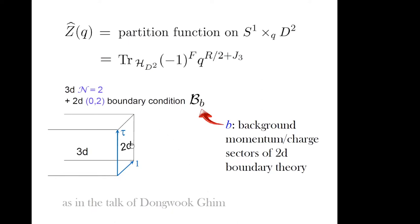This is a very funny partition function - a partition function of the 3D theory on a manifold with a two-dimensional boundary. The two-dimensional boundary has to preserve supersymmetry for this partition function to be well-defined. Since we start with 3D N=2 in the bulk, the half-BPS condition means that two-dimensional (0,2) supersymmetry should be preserved on the boundary. This is exactly the same context as in the first talk of this workshop. You can generalize this notion of elliptic genus to this combined 3D-2D system. This was the perspective we had with Pavel Putrov when we first introduced this quantity - morally it's a three-dimensional version of the elliptic genus.